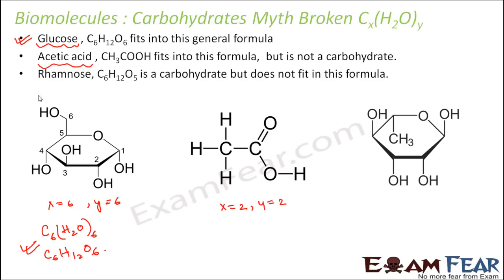Let us look at yet another example — raminose. It has a formula C6H12O5, which does not fit into the formula. It is almost the same as glucose, except that one oxygen is less. So it does not fit the formula, but it is a carbohydrate. With such examples, it was concluded that it was just a myth that carbohydrates are hydrates of carbon. They are basically organic compounds made up of carbon, hydrogen and oxygen.